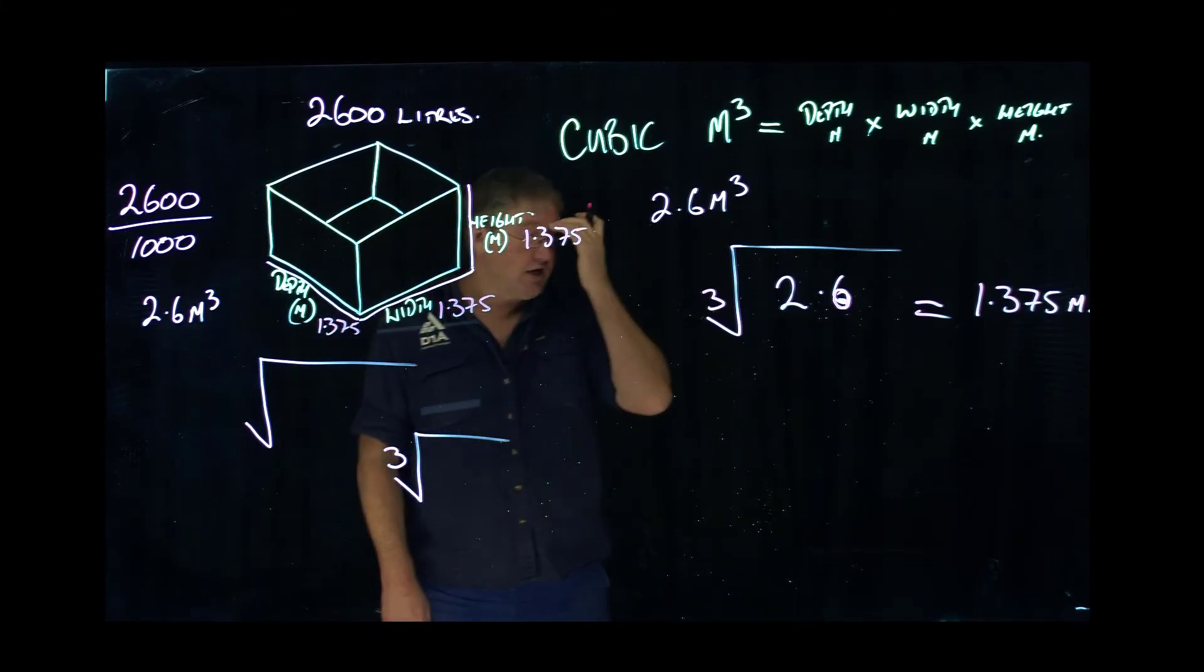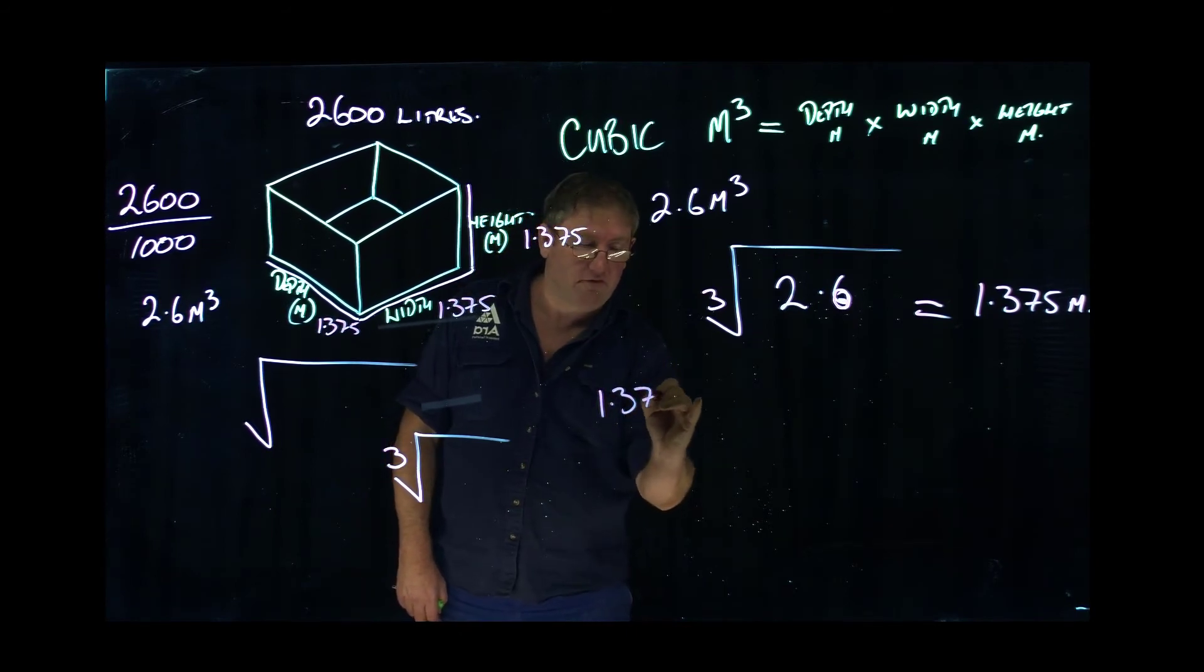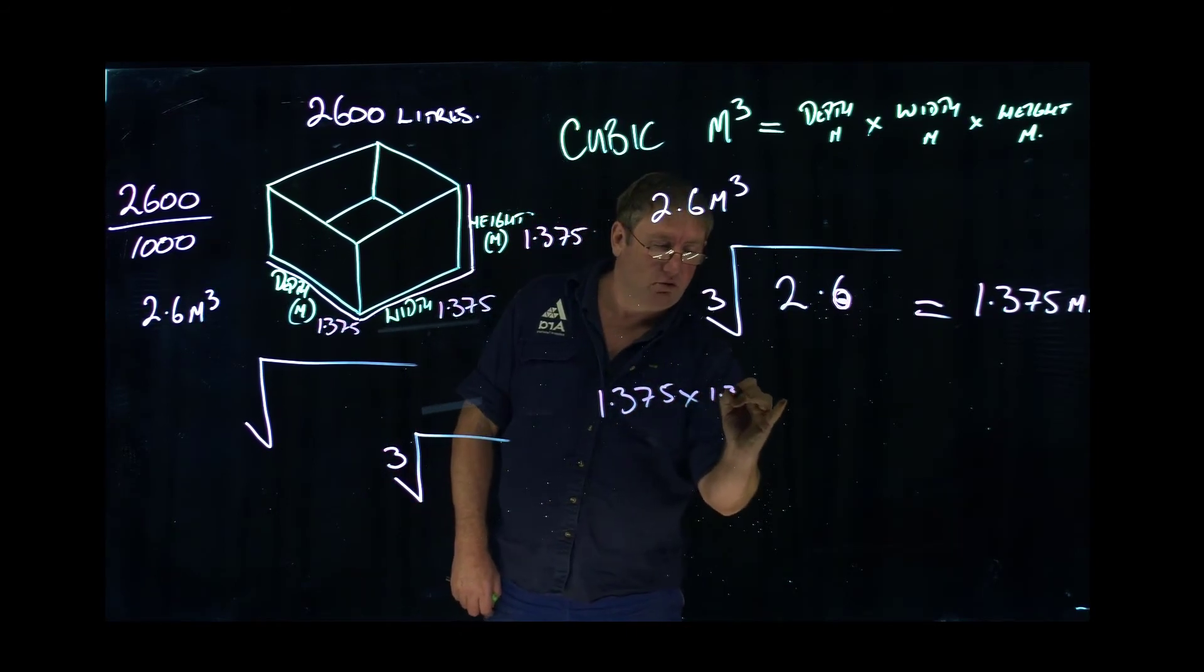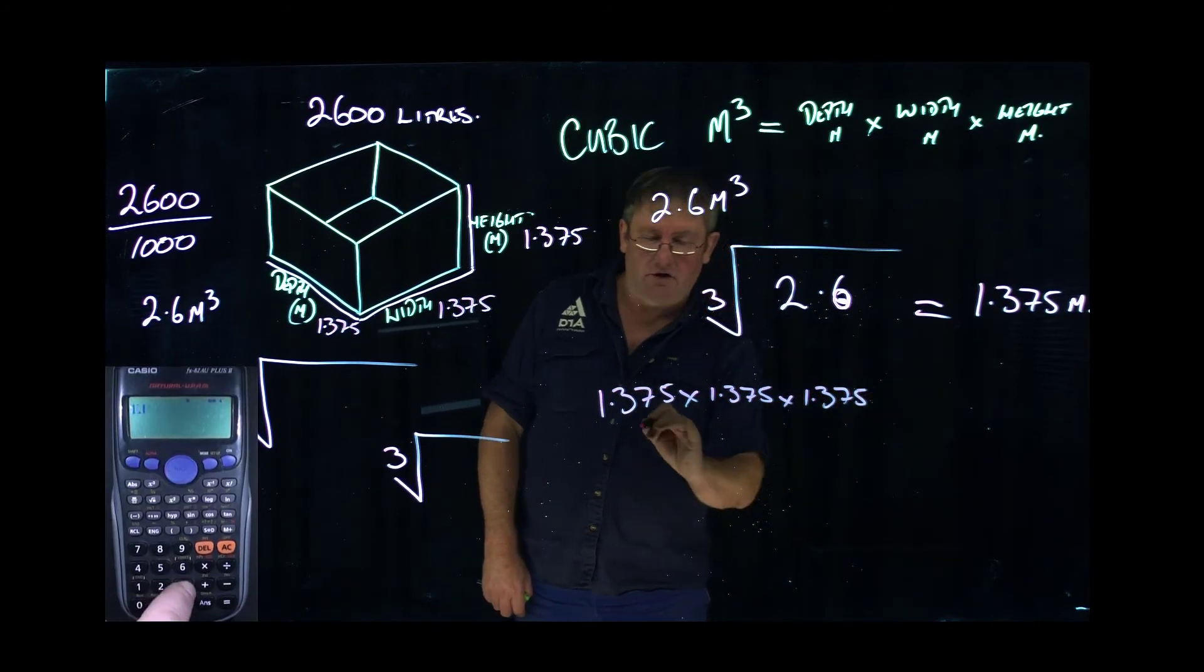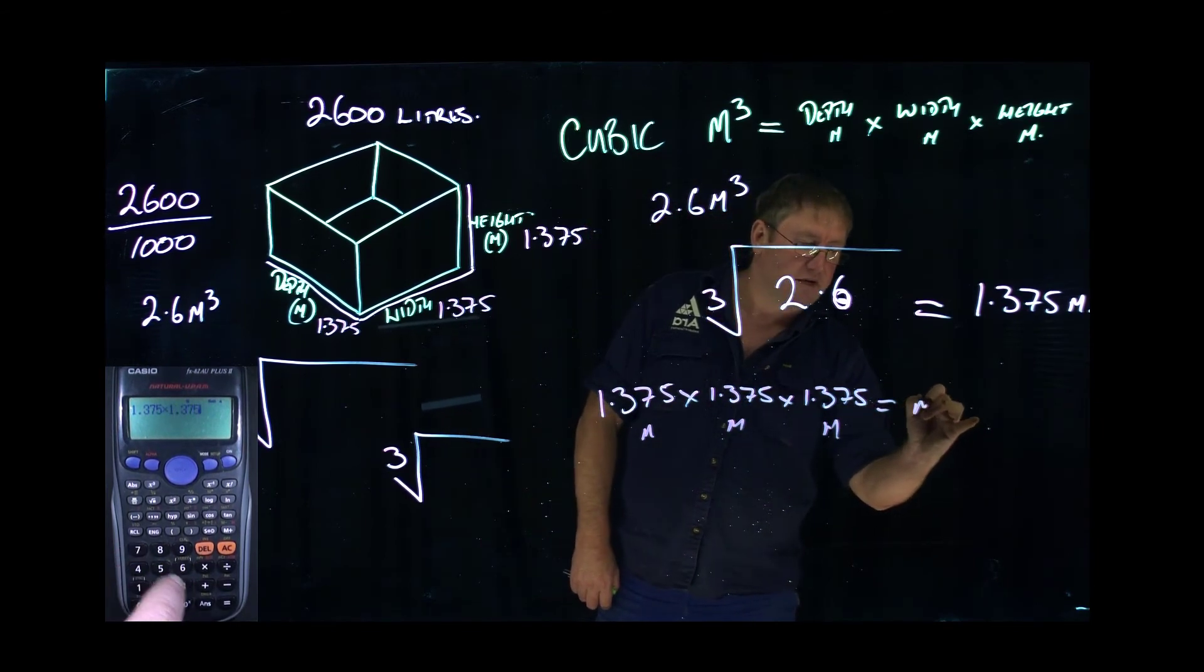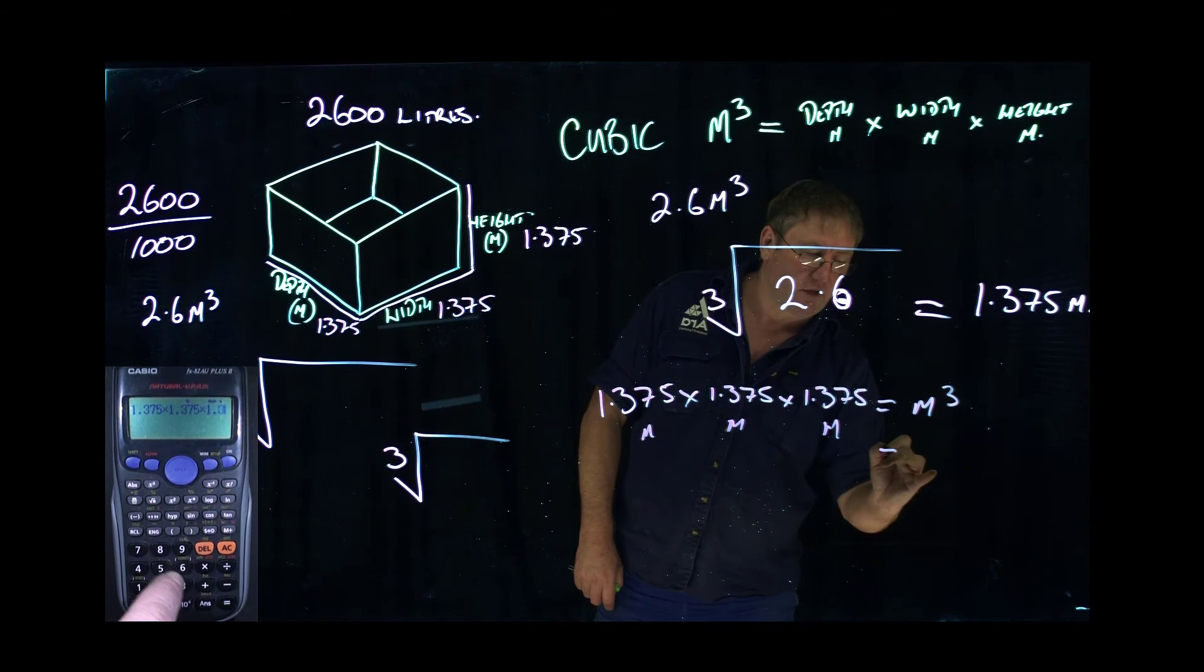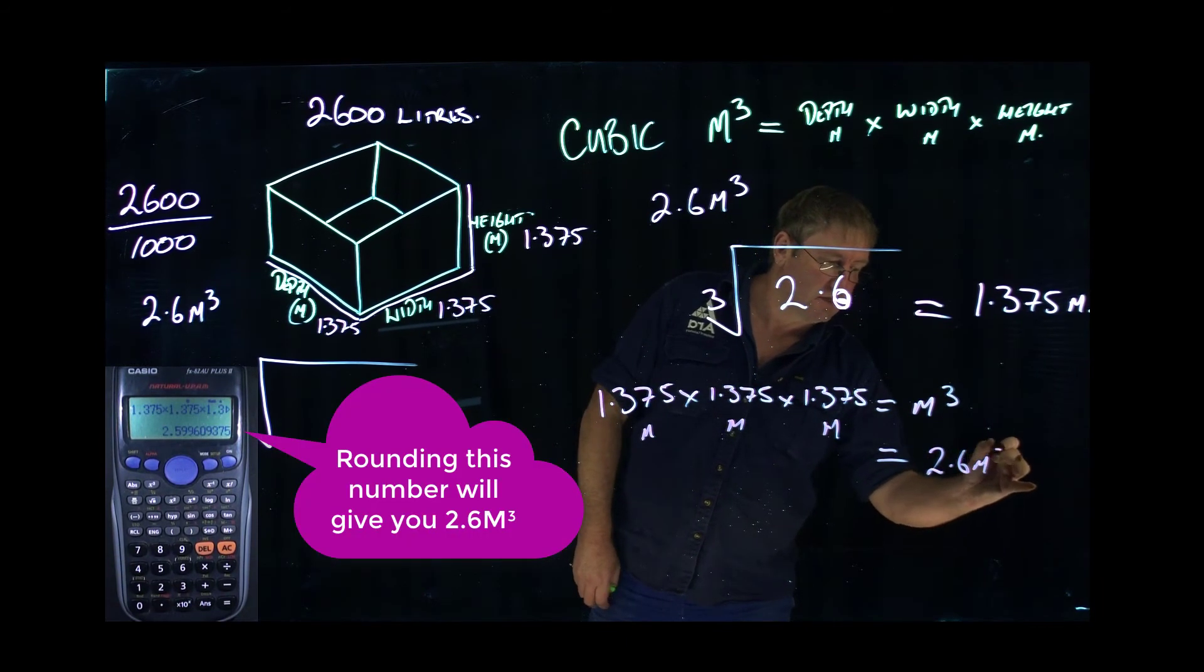Just to check it, you should always go back through your numbers. All you're going to do is 1.375 times 1.375 times 1.375. So you've got a metre times a metre times a metre equals metres cubed. You put that through the calculator, you will come back to 2.6 metres cubed.